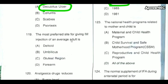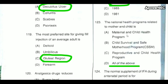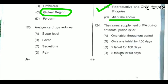The most preferred site for giving IM injection to an average adult is the gluteal region. The national health programs related to mother and child include the Maternal and Child Health Program, Child Survival and Safe Motherhood Program, and Reproductive and Child Health Program — all of the above options are correct.